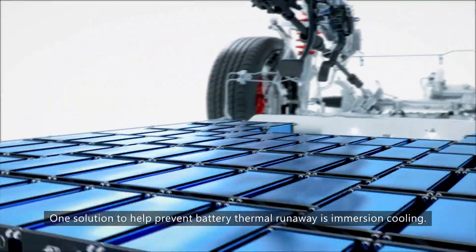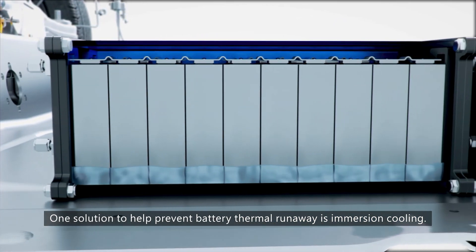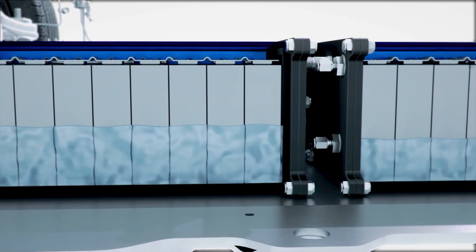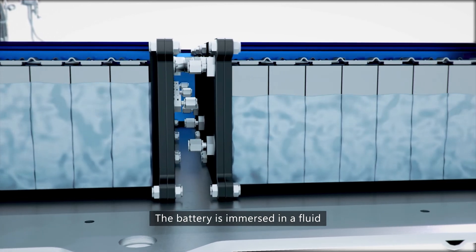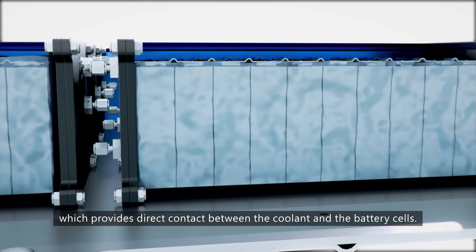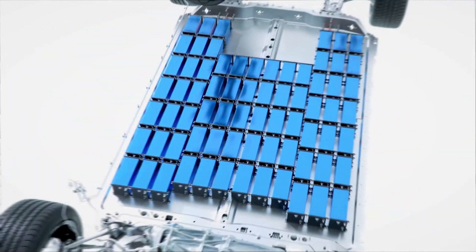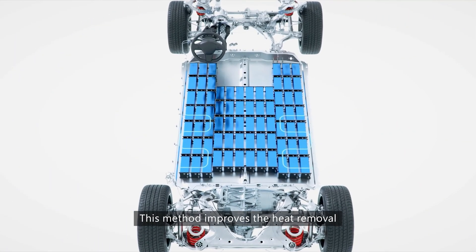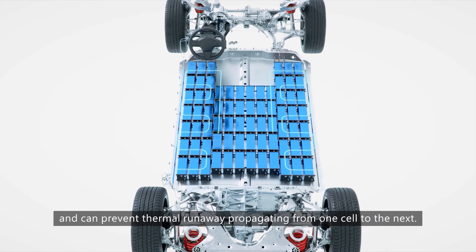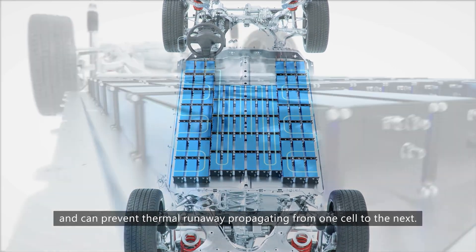One solution to help prevent battery thermal runaway is immersion cooling. The battery is immersed in a fluid, which provides direct contact between the coolant and the battery cells. This method improves the heat removal and can prevent thermal runaway propagating from one cell to the next.